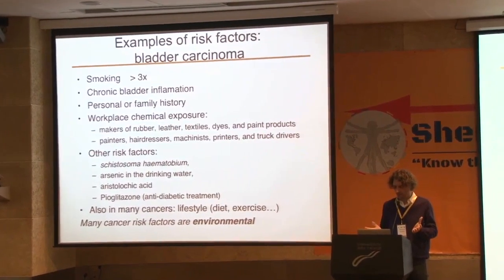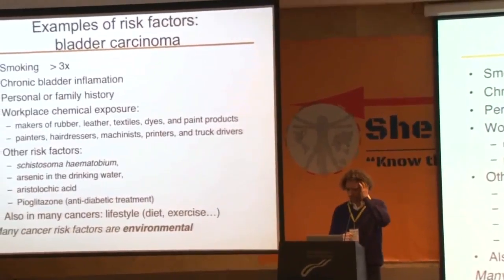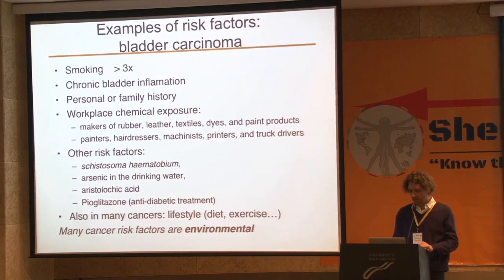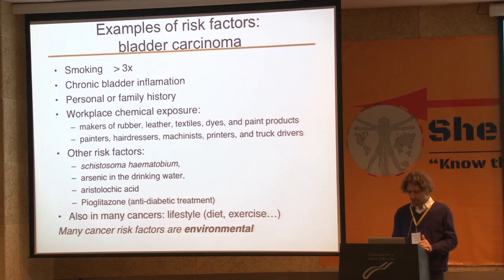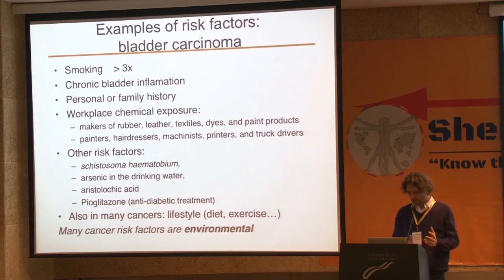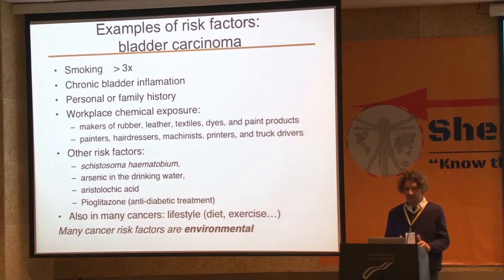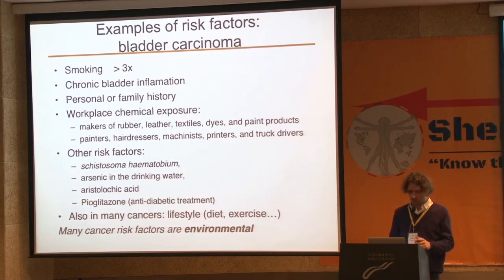Here I've listed, for bladder carcinoma, the known risk factors for this cancer. Smoking is again one of the main risk factors — you are three times more likely to develop cancer if you smoke. But there are many other types of risk factors: some are linked to genetics like personal and family history, and many are linked to exposure to chemical toxic factors, parasites, or life habits. In broad terms, most of them are linked to environment — and the main way to combat cancer is to use this environmental information to improve our treatment of cancer.